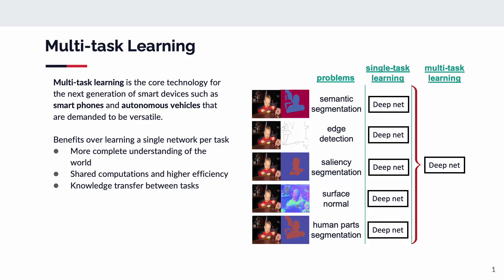Multi-task learning aims to jointly perform multiple tasks within a single network. It is a core technology for smart devices, such as smartphones and autonomous vehicles. Compared with learning a single network per task, multi-task learning has a more complete understanding of the world, shared computations, and higher efficiency. It also enables knowledge to be transferred between tasks.